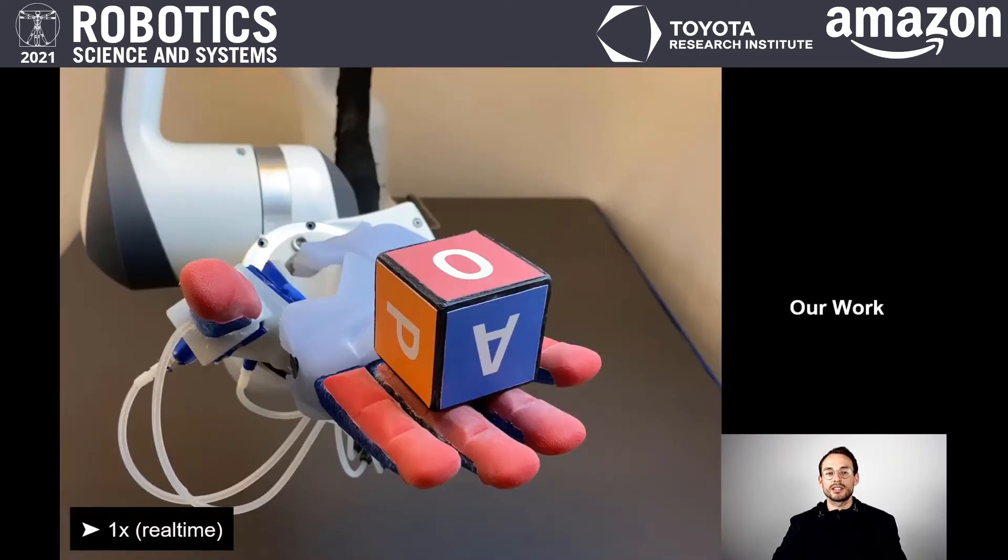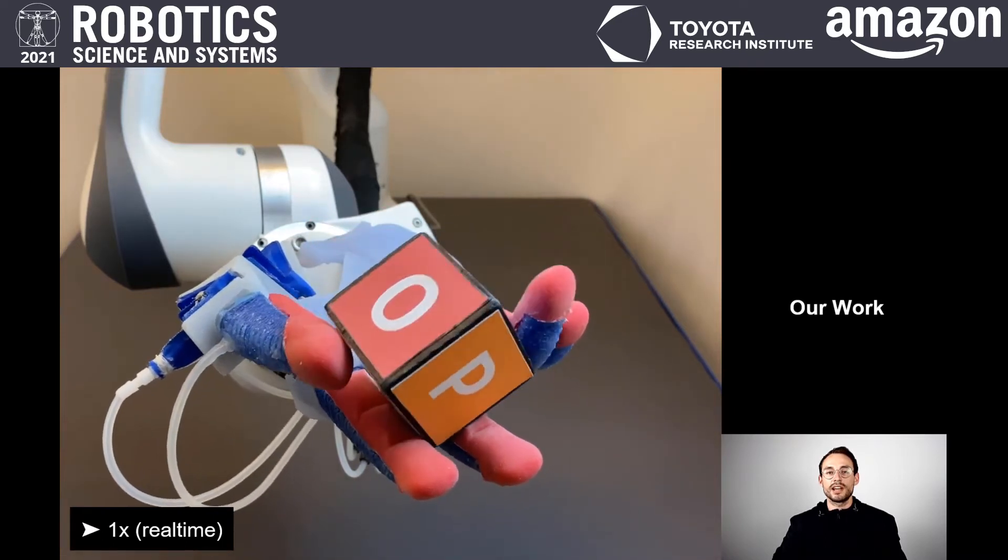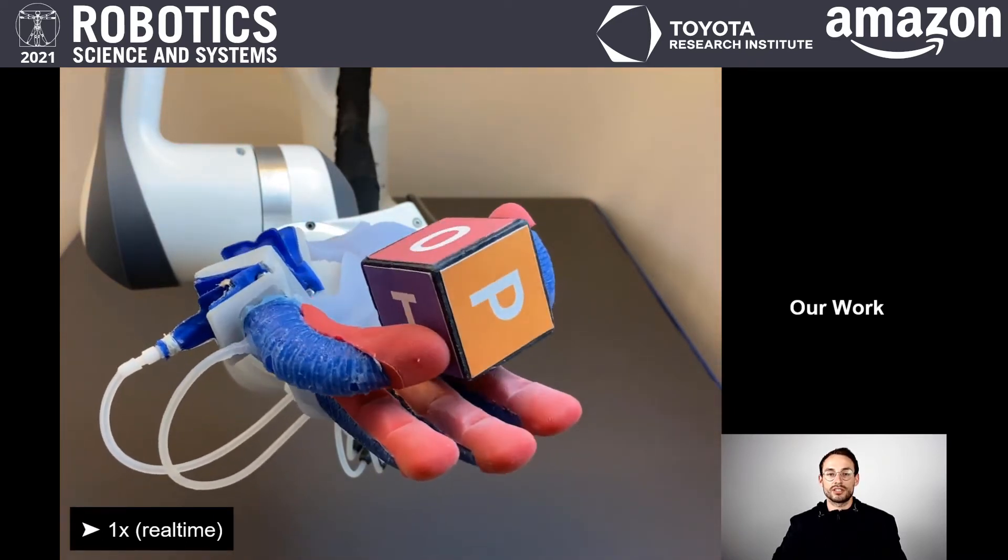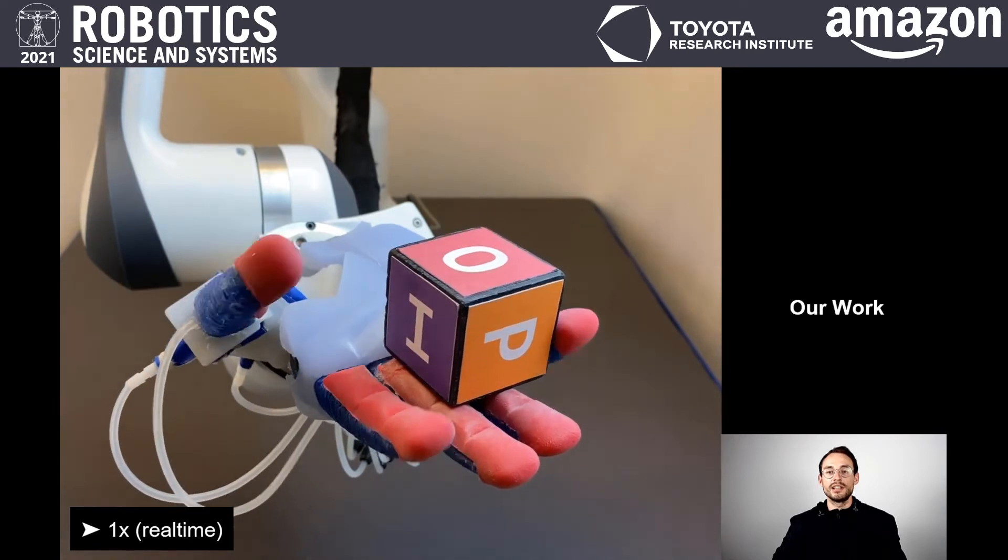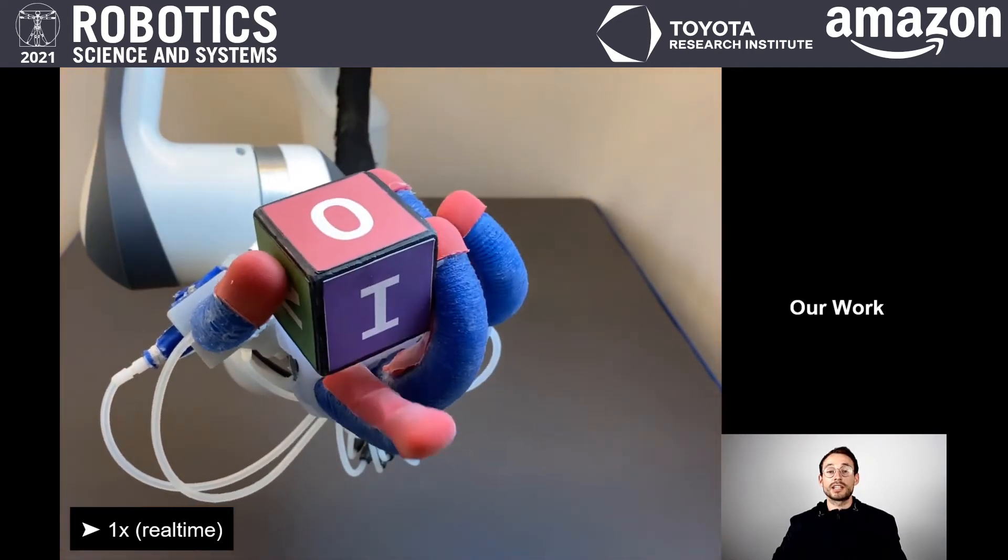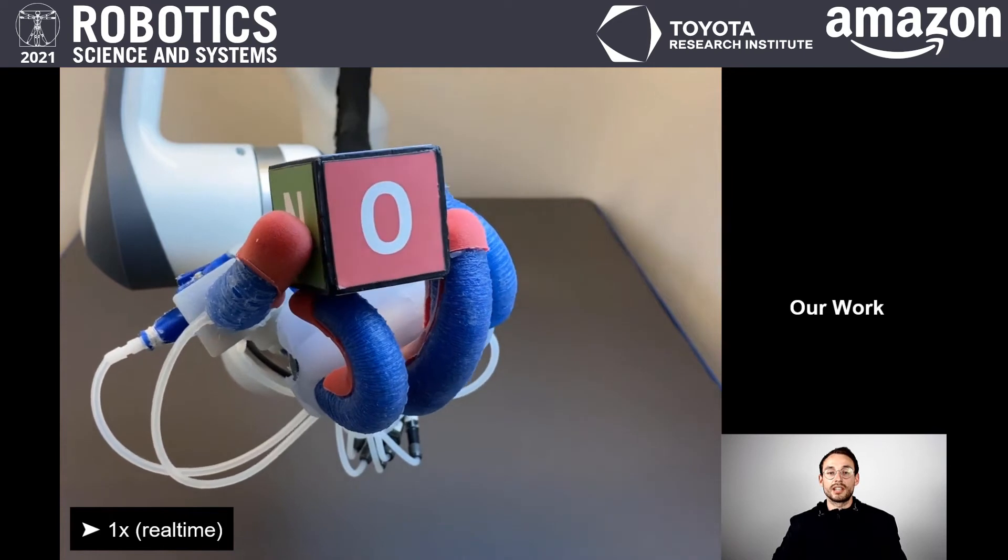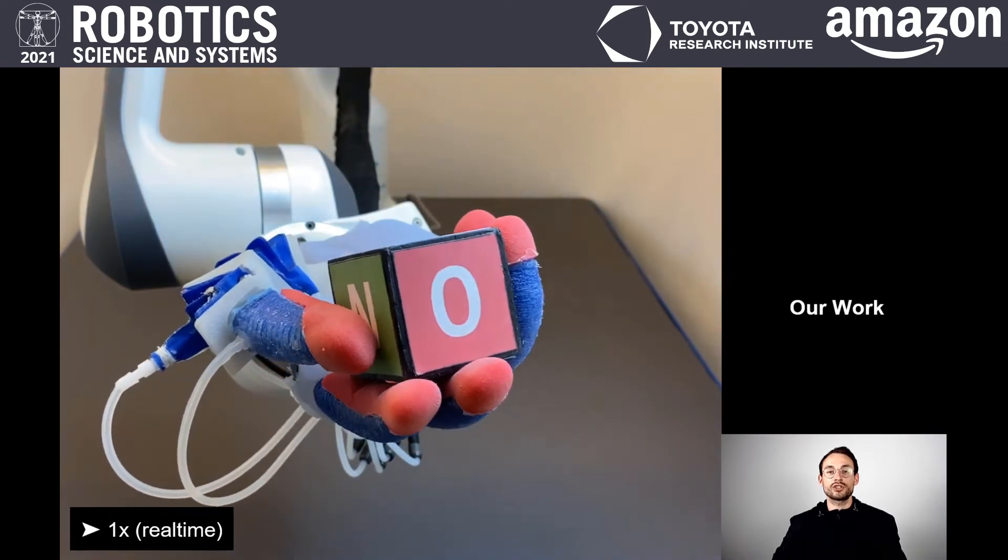Here are the skills we designed. First, the hand spins the cube by 90 degrees and shifts it back with a finger-gating motion. Next, it lifts the cube and pivots it by 90 degrees. Then it lowers the cube and again shifts it back.